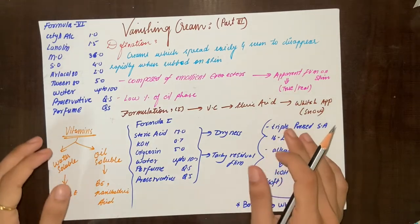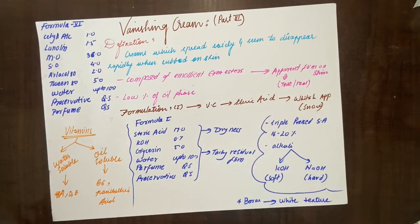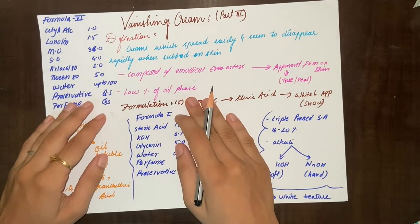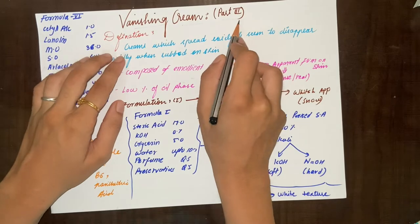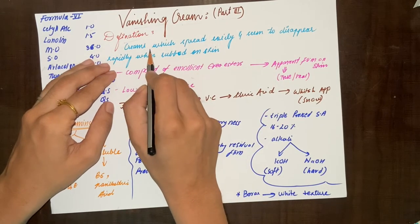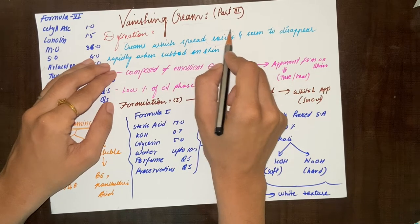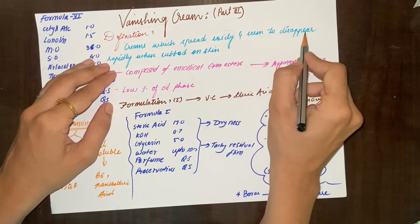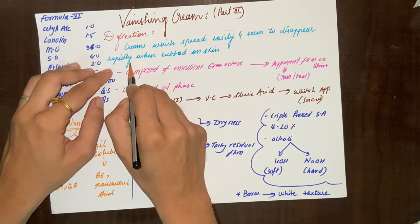Hello and welcome to Cosmetic Academy. In this video we are going to learn about vanishing cream. What is vanishing cream? It's a type of cream which spreads easily and seems to disappear rapidly when rubbed on skin. This cream will be easily spread on the skin and it will disappear quickly when we rub it.